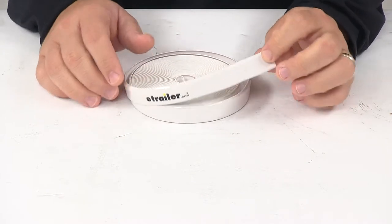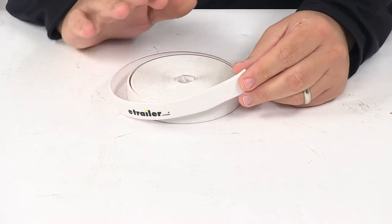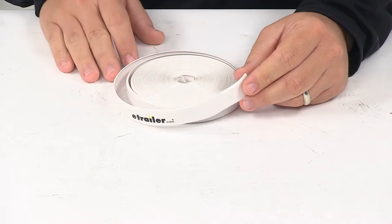The trim just slides into the existing metal track on your application, and this is available in a hundred foot long roll that measures three quarters of an inch wide.